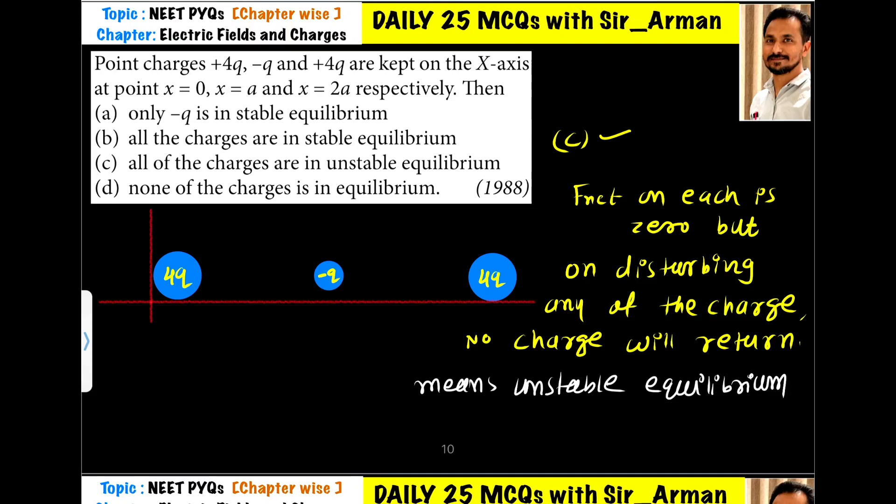Point charges +4q, -q, and +4q are kept on the x-axis at point x equals 0, x equals a, and x equals 2a. We have to identify which of the options is correct.